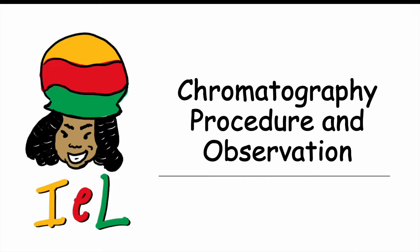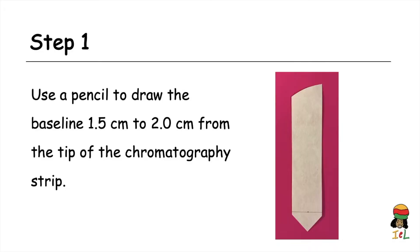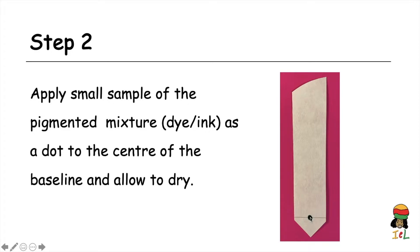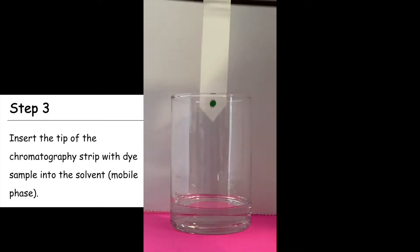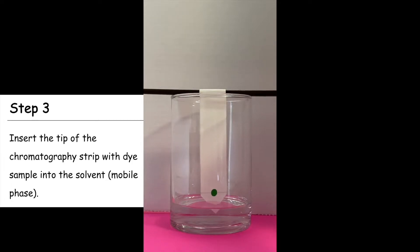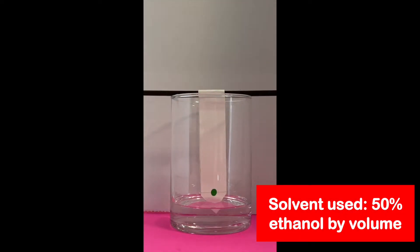We will now take a detailed look at the chromatography procedure and observation. Step one: use a pencil to draw the baseline, a horizontal line 1.5 to 2 centimeters from the tip of the chromatography strip. Step two: apply a small sample of the pigmented mixture as a dot in the center of the baseline and allow that sample to dry. The chromatography strip with the green dye sample is then inserted into the solvent, ensuring that only the tip of the strip is in the solvent.